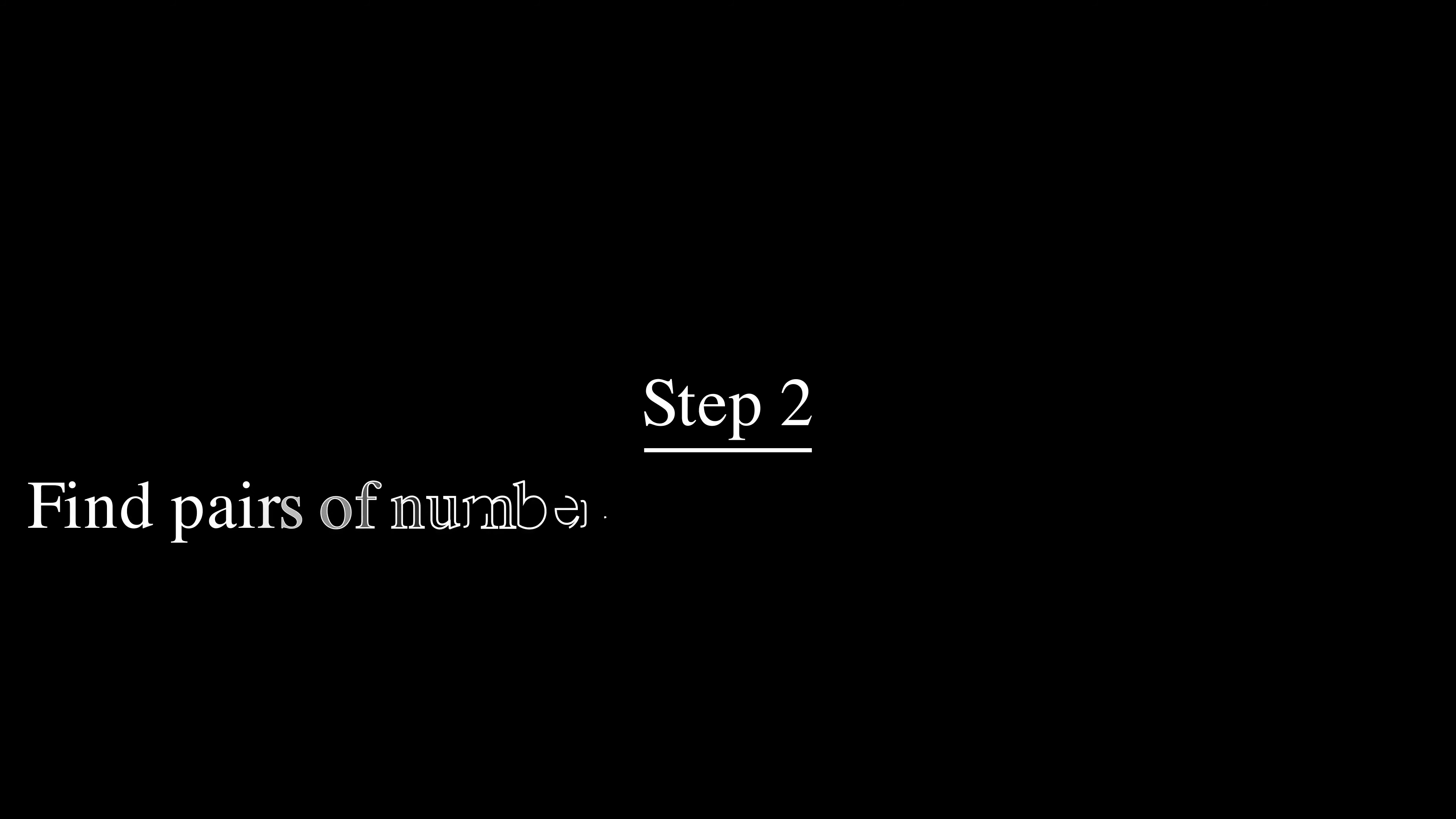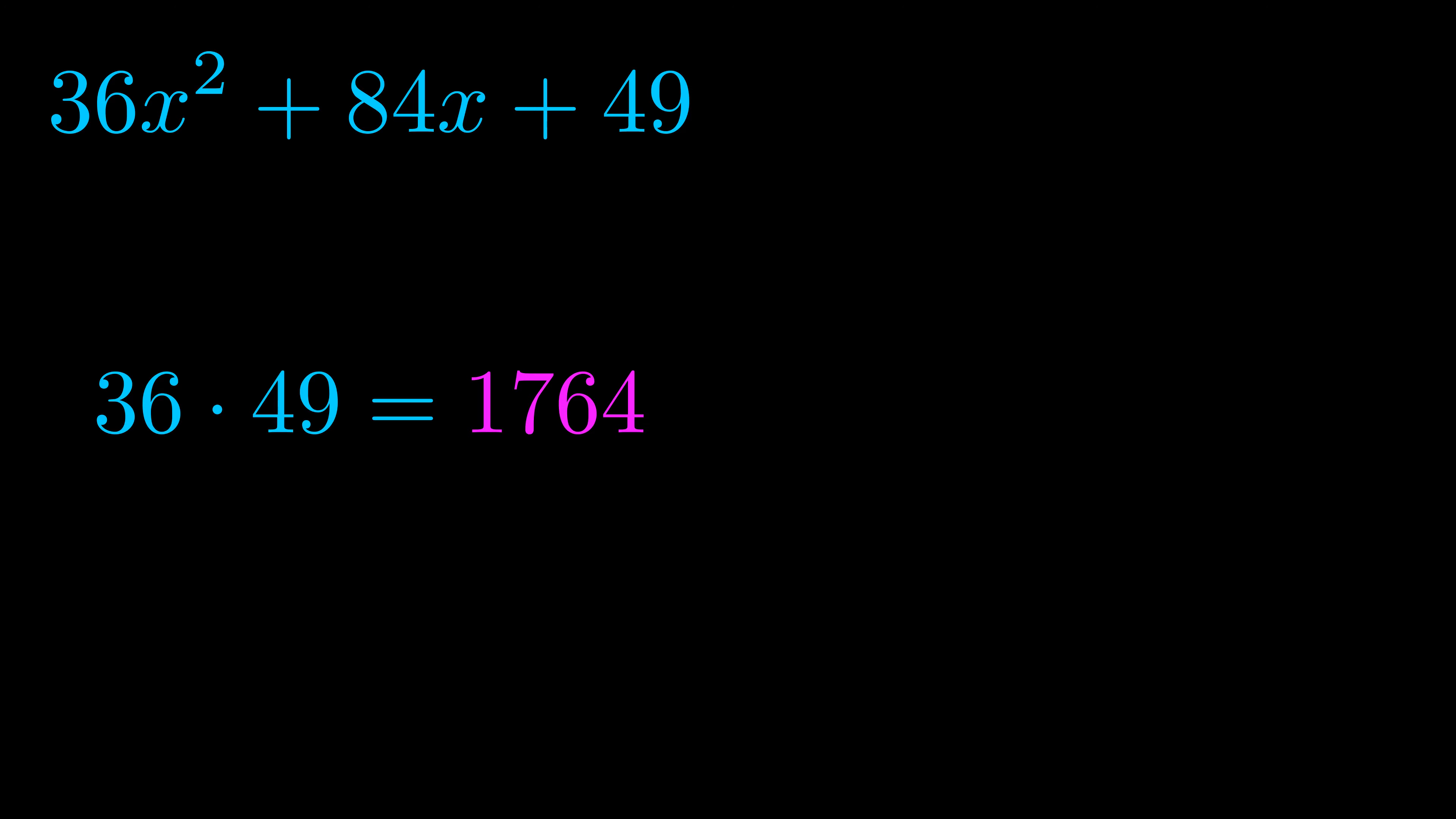Step two is to try to find all of the pairs which multiply to this number. Now you don't really need to find all of them, but go ahead and write down as many numbers as you can that multiply to the magenta value for now. Pause the video and resume when you're ready to continue.